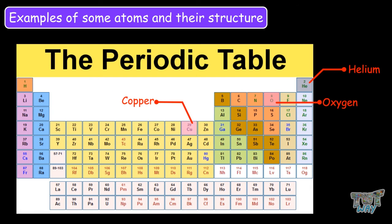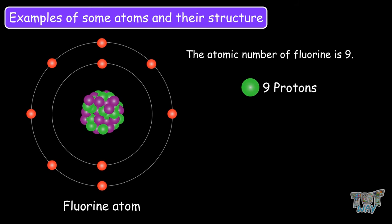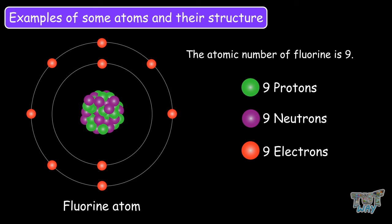Now let's have some more examples of atoms and their structure. This is the fluorine atom. The atomic number of fluorine is 9, which means it has 9 protons and 9 neutrons, and 9 electrons revolving around it in the electron cloud.